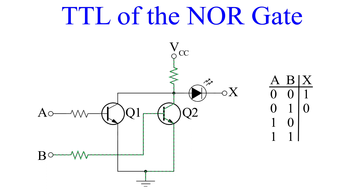Let's turn B off now and turn on input A. Q1 is now properly biased, allowing current to flow from VCC through the transistor and straight to ground. Once again, the LED is off. So for inputs A equals 1 and B equals 0, we get an output of 0.